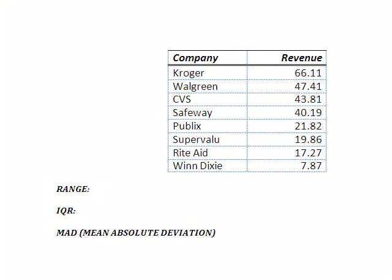I'm going to work with a set of data that is some companies, grocery stores, drugstores, and their revenue. So I've got a data set with eight values in it, and what I want to start out in this first section is to do the range, the IQR or interquartile range, and MAD or the mean absolute deviation. So let's start with the range.